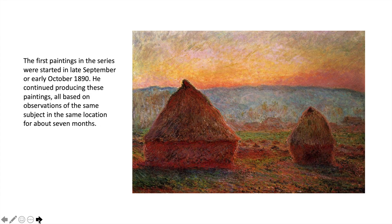The first paintings in the series were started in late September, early October 1890. He continued producing these paintings, all based on observations of the same subject in the same location, for about seven months. Remember we talked about the landscape in the Poussin painting, how it was largely imaginary — representative of an ideal or romantic landscape. Well, this is not. This is actually a depiction of what Monet is experiencing with his senses.